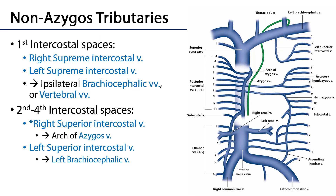There are a few non-azygous tributaries. The first intercostal spaces are probably the simplest — they are drained by the supreme intercostal veins. Right and left supreme intercostal veins drain the first intercostal space and may drain either directly into their ipsilateral brachiocephalic veins, or into their ipsilateral vertebral veins, which are branches of the subclavian veins. The right one might also drain directly into the superior vena cava.